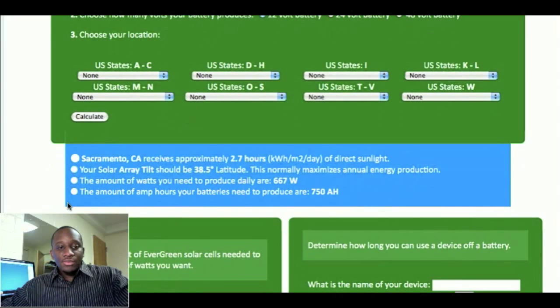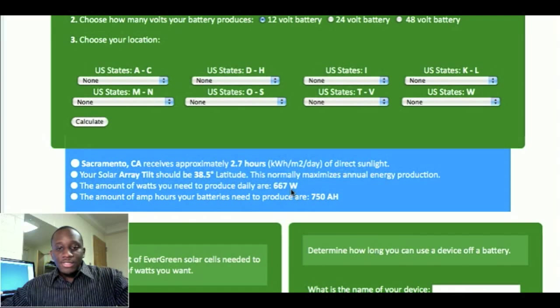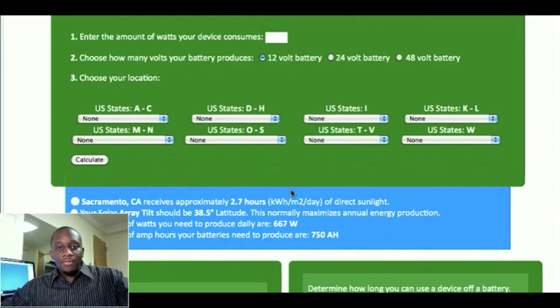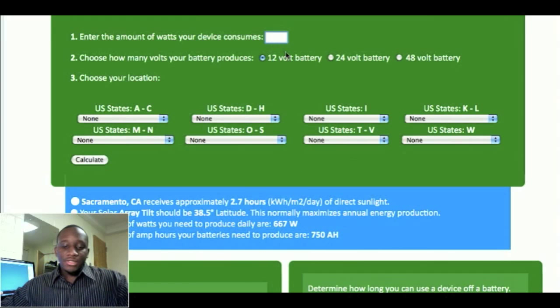And the next line is what most people want to know is the amount of watts you need to produce daily is 667 watts. And the amount of amp hours your battery needs to produce are 750 amp hours. So as you can see, it's a lot of watts to power something that produces, I mean, power something that needs about 50 watts to actually run correctly.